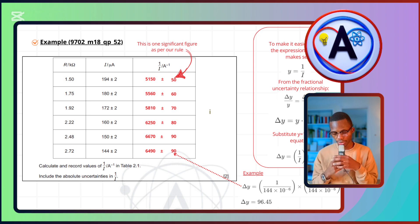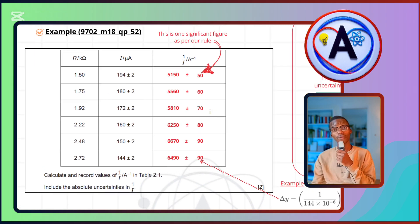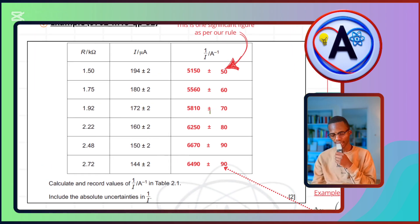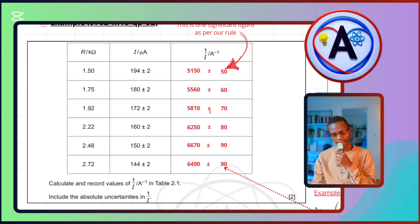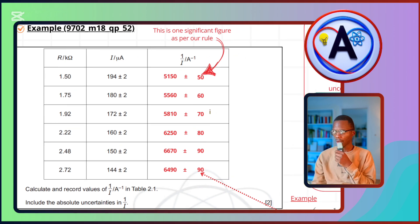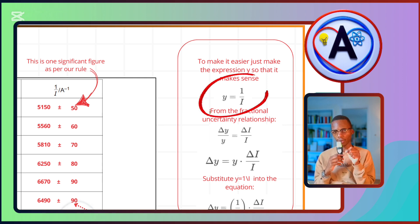Let's go with the first example from February/March 2018 Question Paper 5.2. We have r with i and we've been asked to quote 1/i in units of per ampere and include the absolute uncertainties. Since i has three significant figures, saying 1 over that gives 5150. To find the uncertainty, it helps to let y = 1/i to conceptualize the expression.